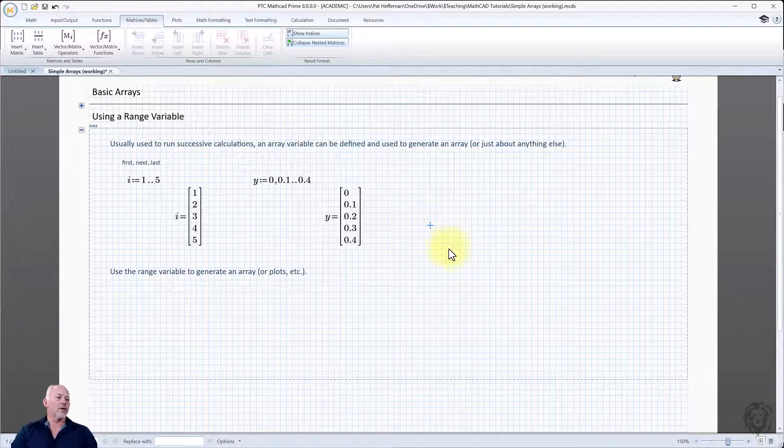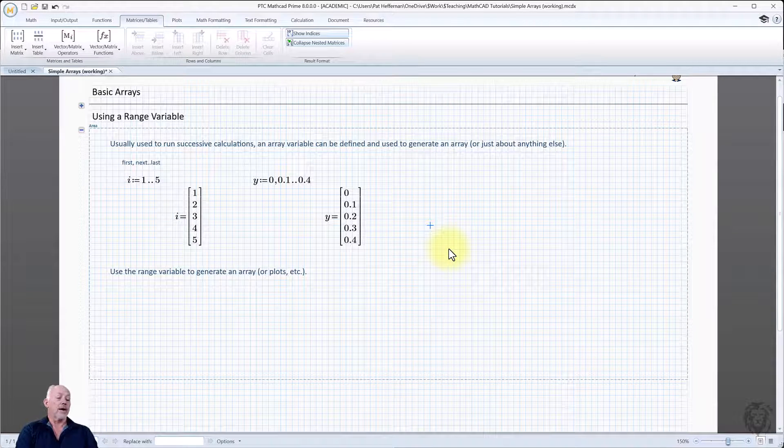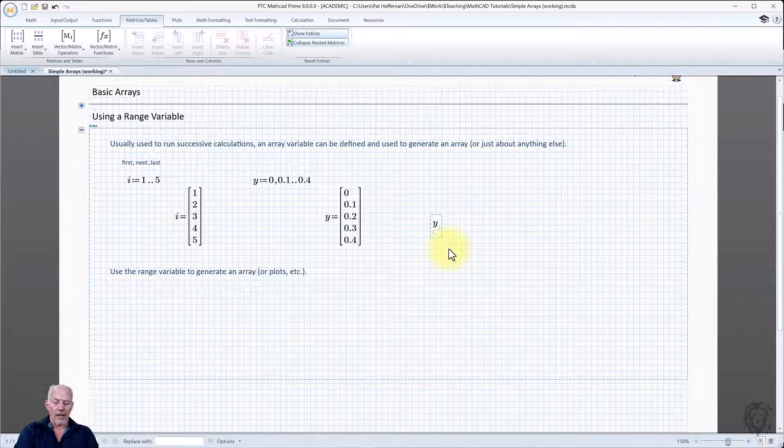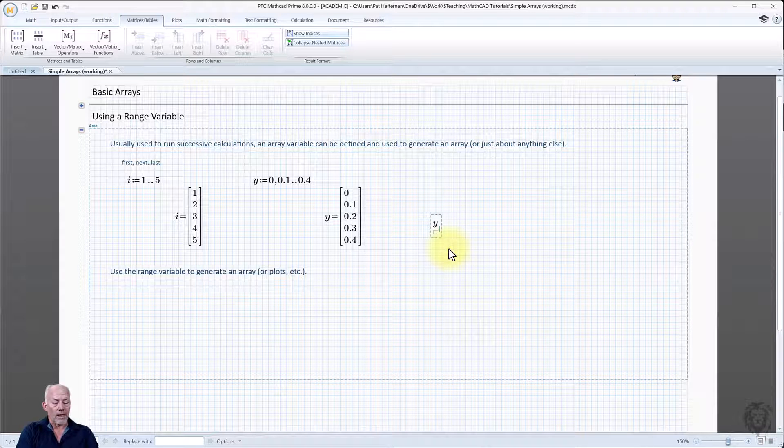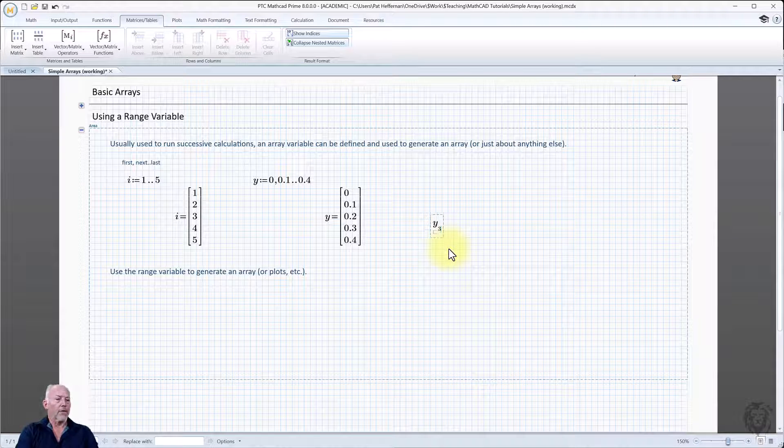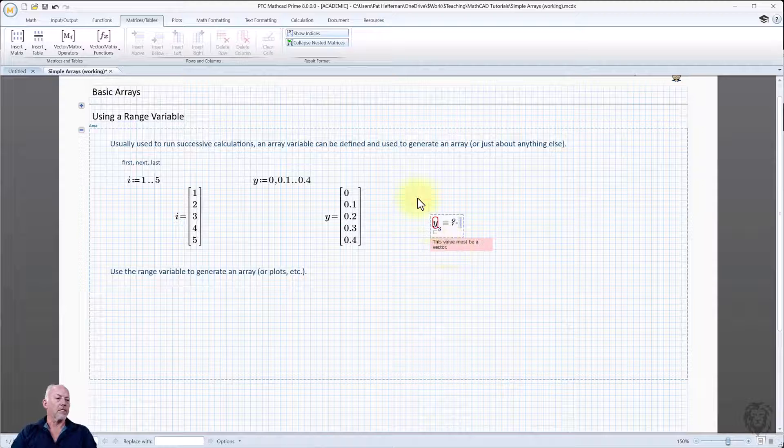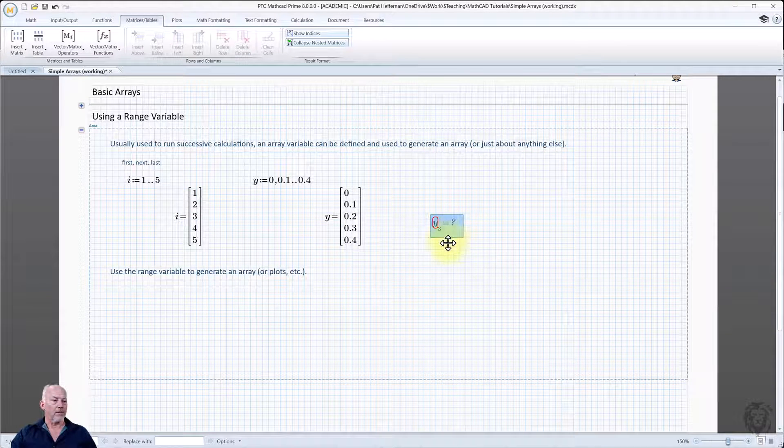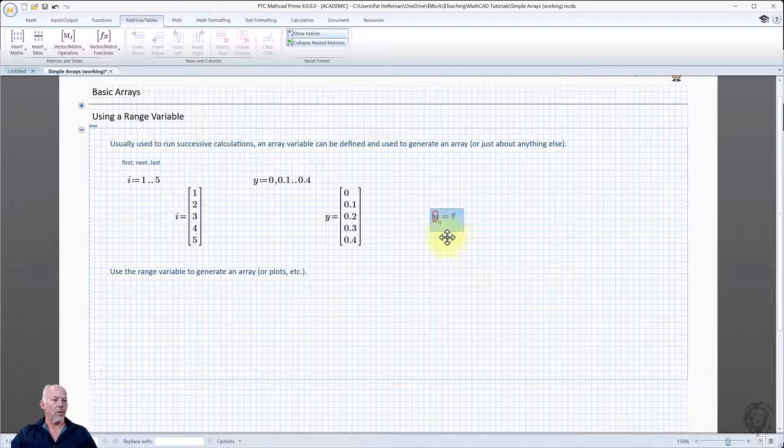And just to show you, it looks like an array, smells like an array, but it is not an array. So if I were to use my Y left bracket, left square bracket, and say I wanted to get the third element out of it, and I hit my equal sign, you see that it's not a vector. And so it's not able to return a value for Y sub three.